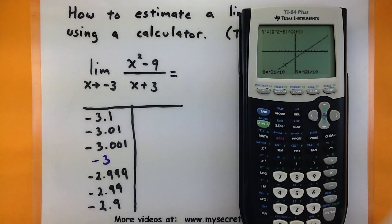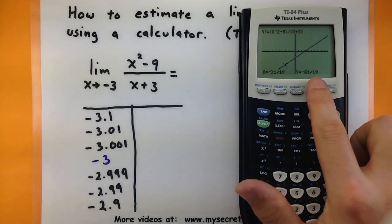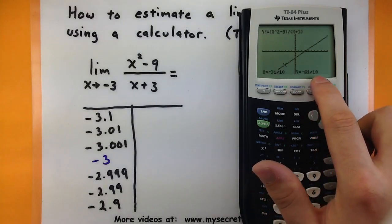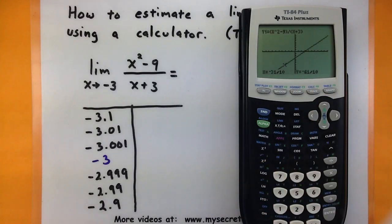The calculator won't take too long to compute it, but you can see it does give me a y value, negative 61 tenths. Now that's pretty good, but sometimes we actually want a decimal or an estimate.